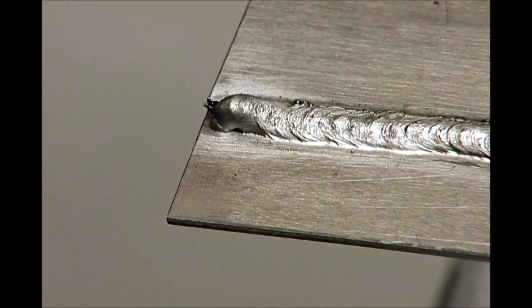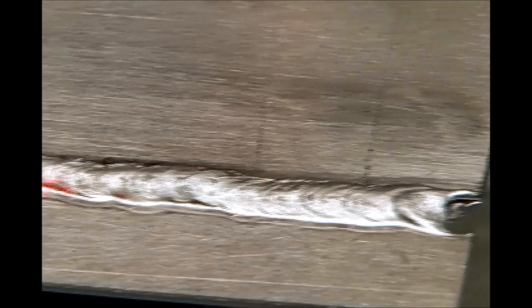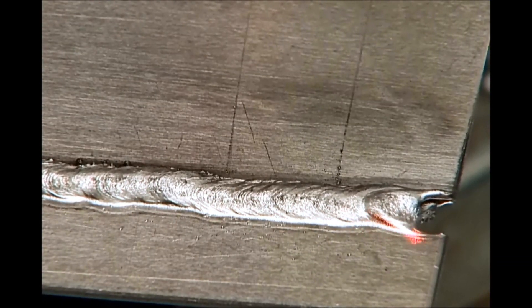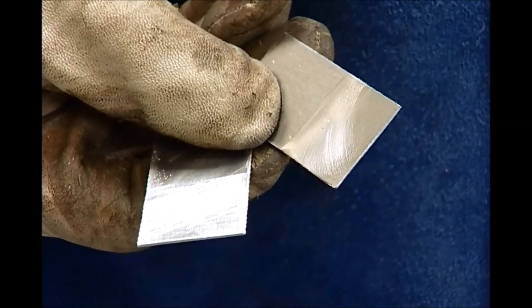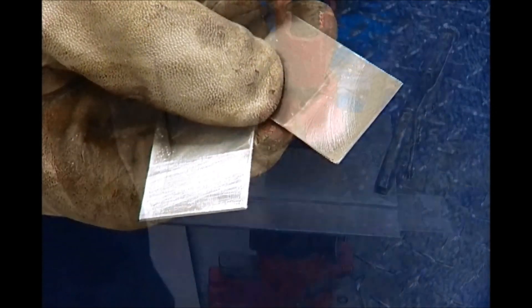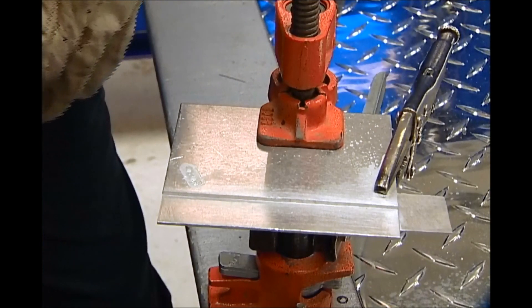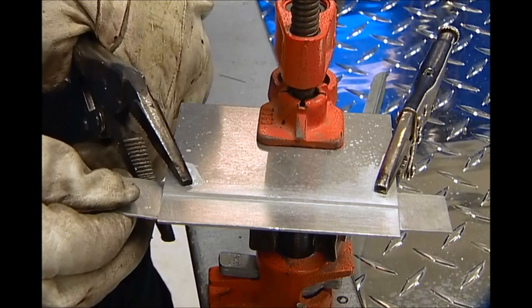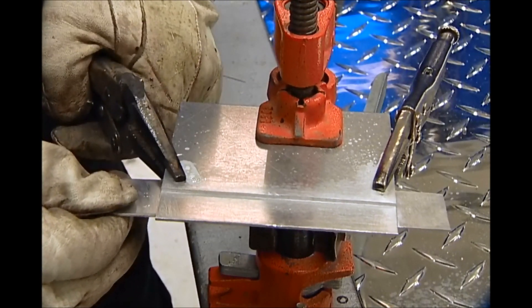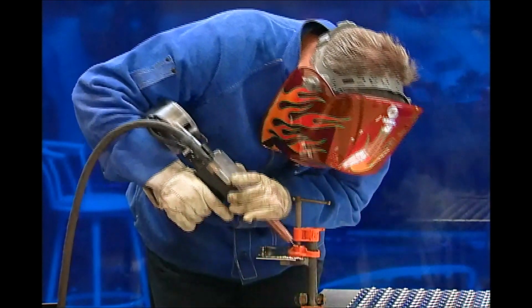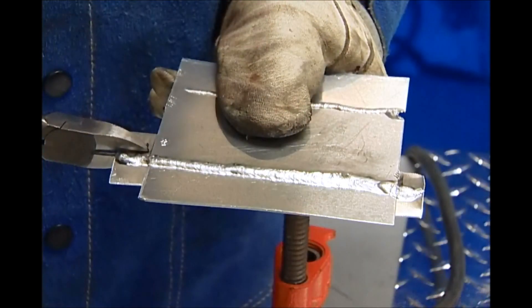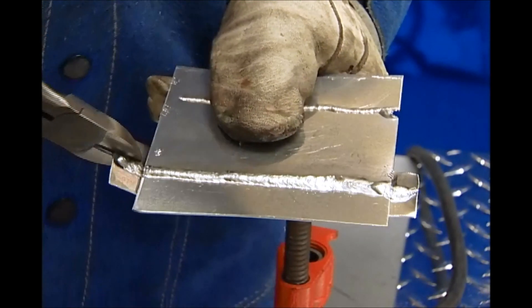Two consistent problems with welding aluminum are cold starts and cratering at the weld finish. One way to combat these problems is with the use of run-on and run-off tabs. The tabs are clamped in place and serve as starting and finishing ramps leading to and away from the weld area. Once the weld is completed, they are removed, leaving only the finished weld.